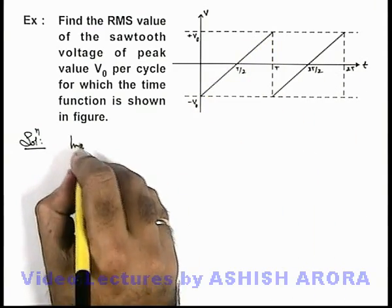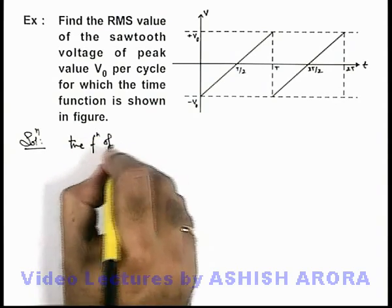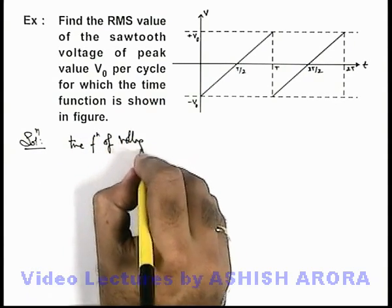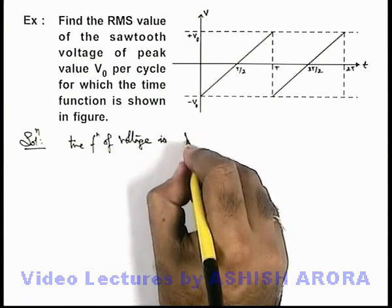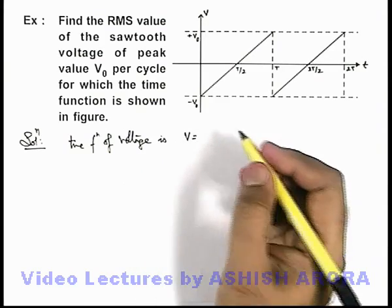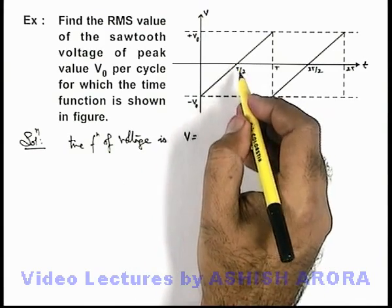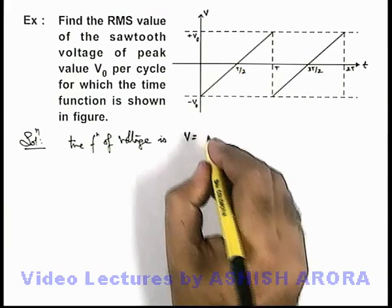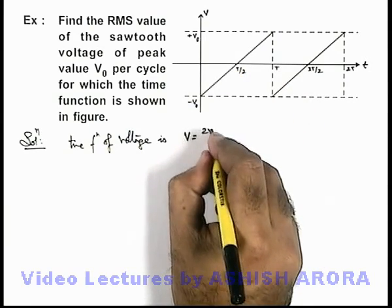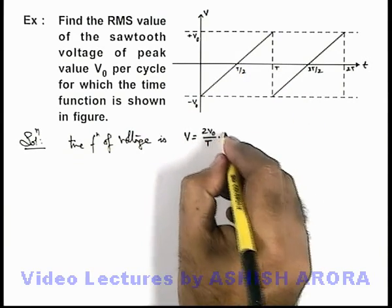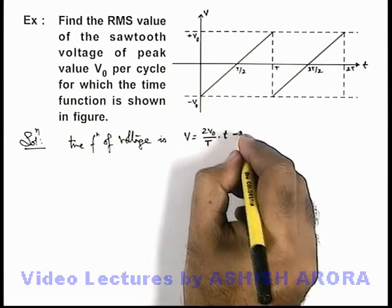We can directly write the time function of voltage. The slope of this straight line is 2V₀/T, so V can be written as (2V₀/T) multiplied by time, minus V₀.